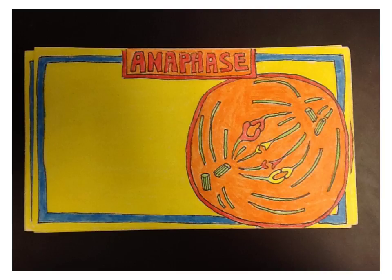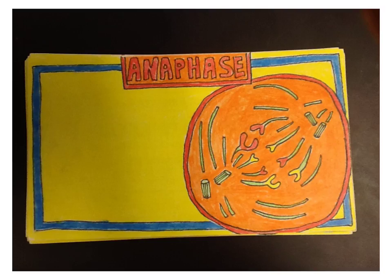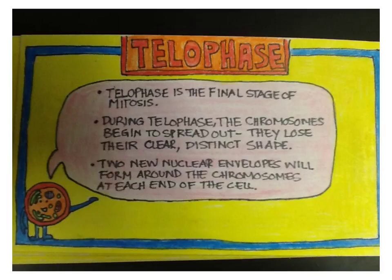This is picture number two. You can see the chromatids are starting to separate and pull towards their opposite poles. And a third anaphase — you can see these are further apart now, moving further away from each other. On the back of the third anaphase card is a description of telophase, the final stage of mitosis. Chromosomes begin to spread out and lose their clear, distinct shape. The nuclear envelope begins to reform.